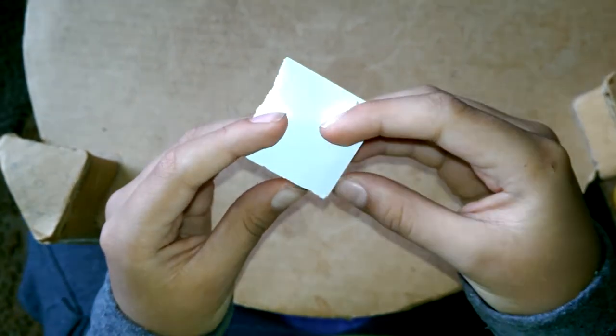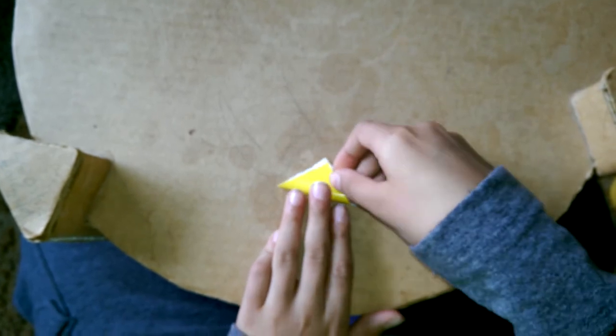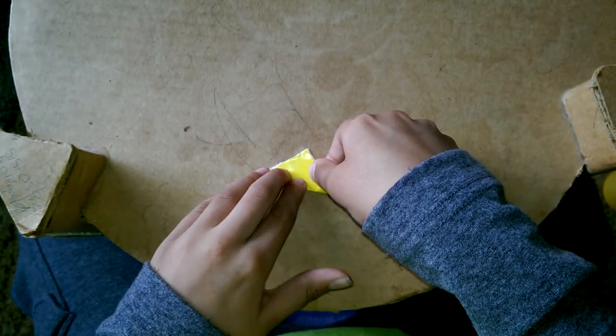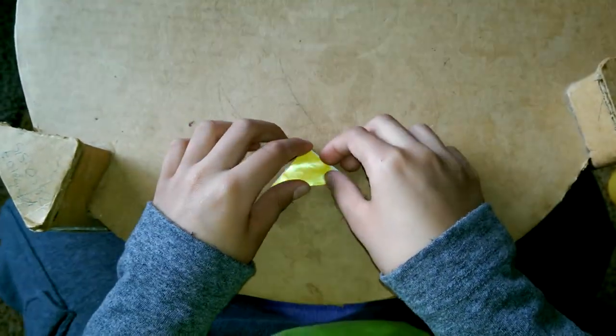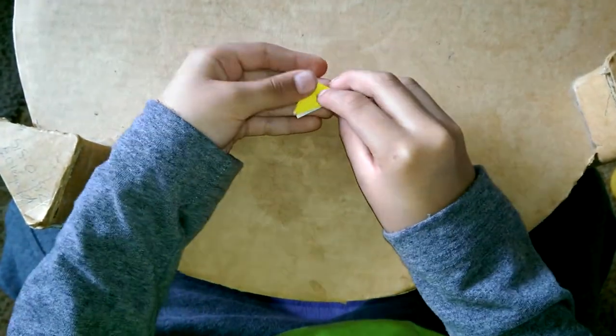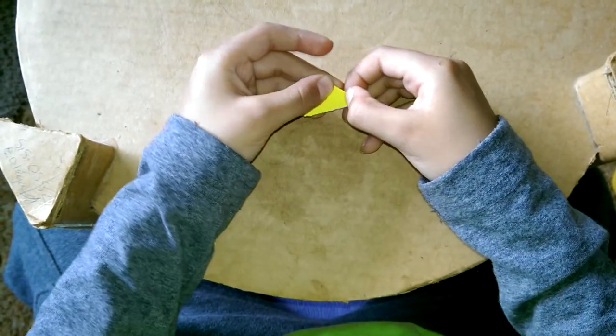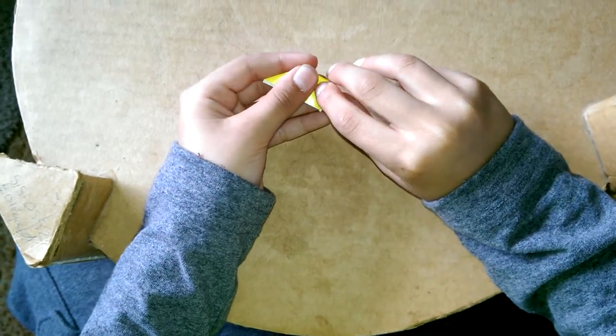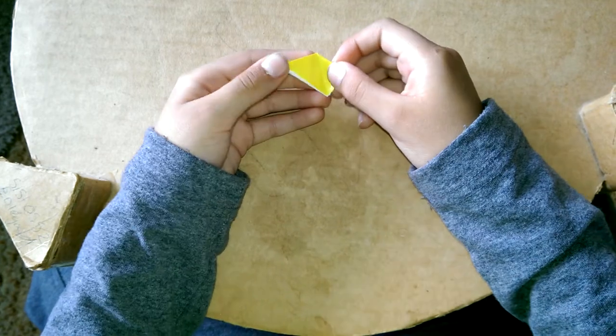So we start with a little paper. We go over and make like a mountain. I call this the mountain fold. And then you get it and fold it into another mountain. And then you open it and fold on those lines with the flaps that are on the sides.